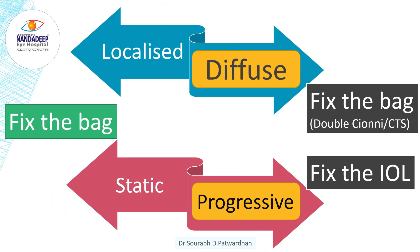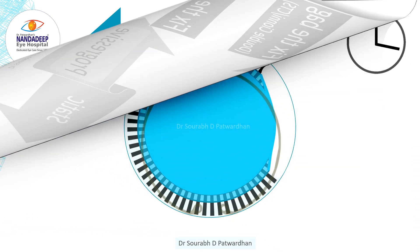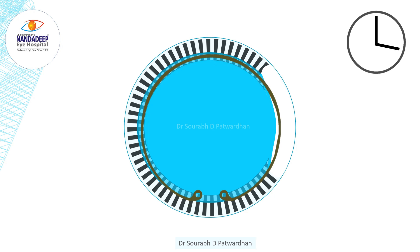Diffuse conditions include pseudo-exfoliation and Marfans. Depending on whether it is localized or diffuse and static or progressive, we have to decide whether we want to fix the bag or remove the bag and fix the IOL instead. In case of diffuse progressive disease, we can just remove the bag and fix the IOL directly to sclera.